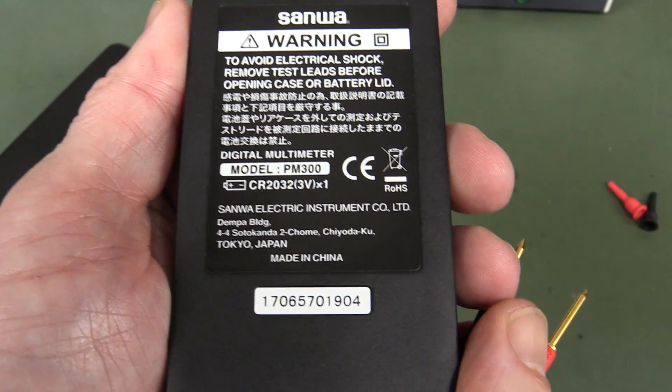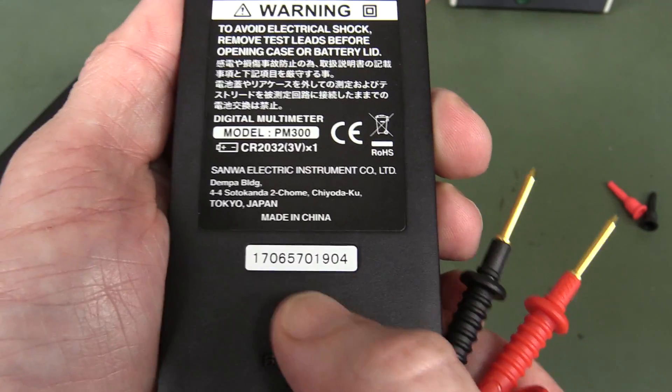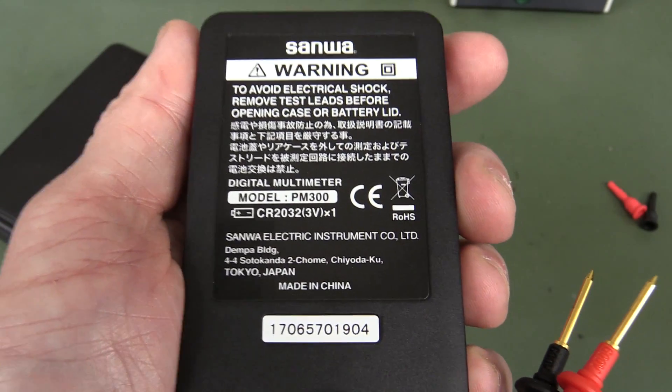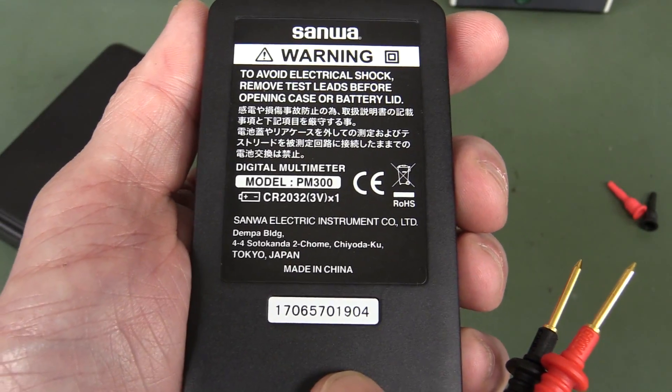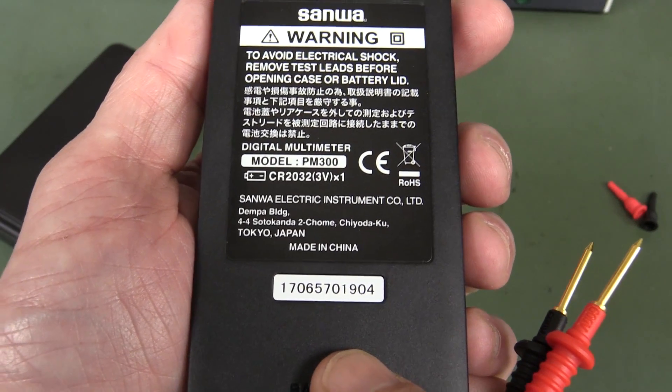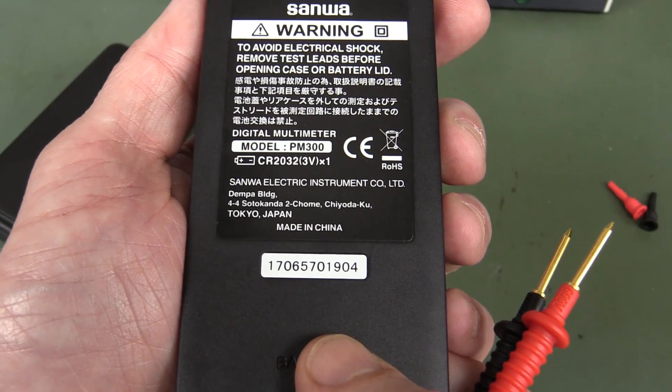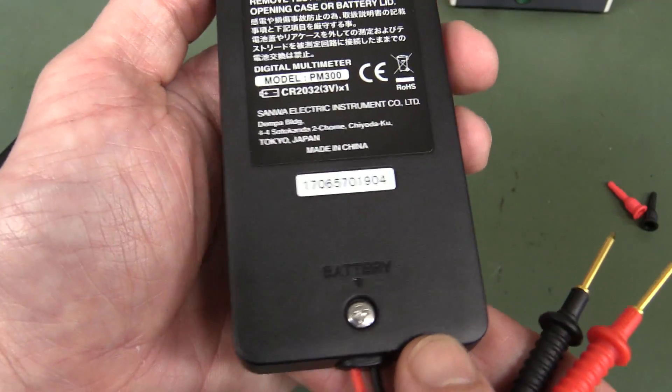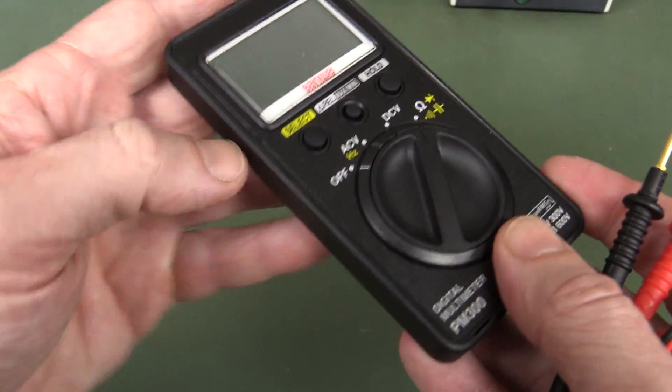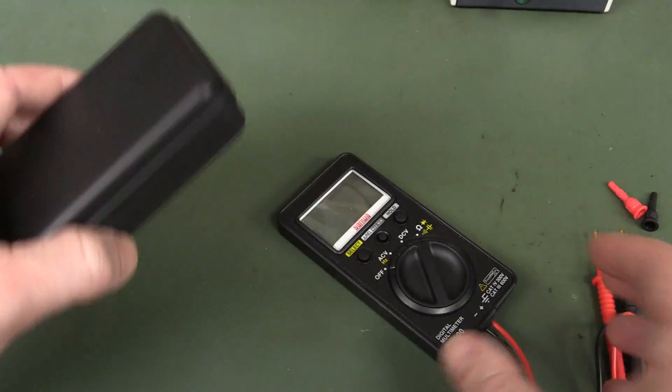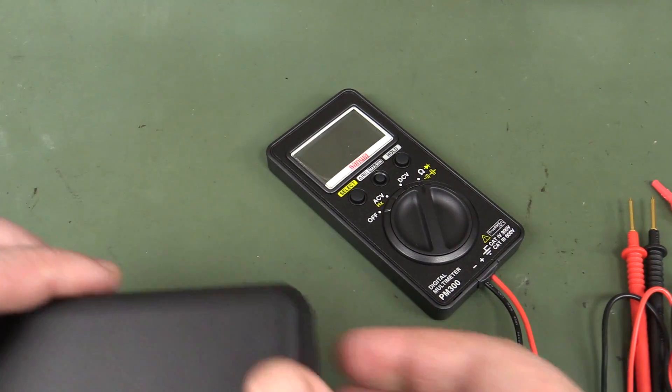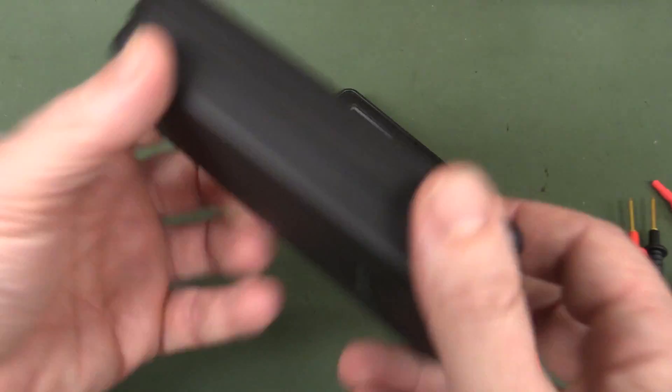Very surprisingly, it is made in China. It is a Japanese company. Sanwa meters are traditionally made in Japan, so I'm not sure why this one is made in China. But as you'll see inside, it is excellent quality. So they're actually maintaining the quality of whatever factory is producing these.